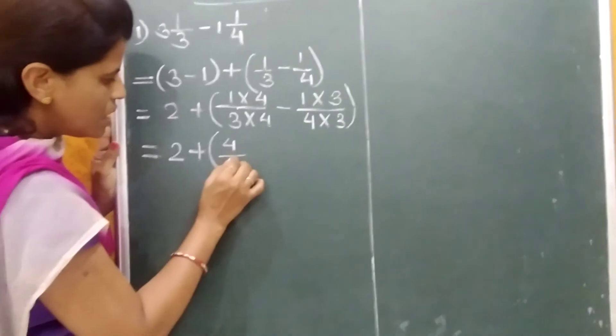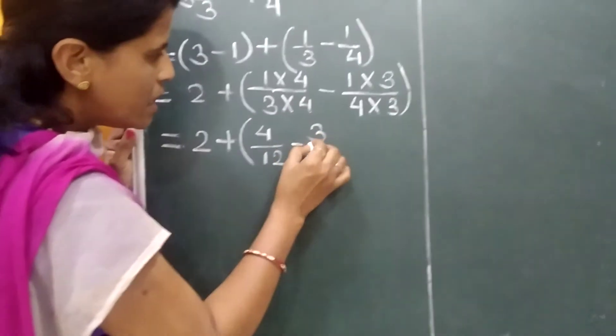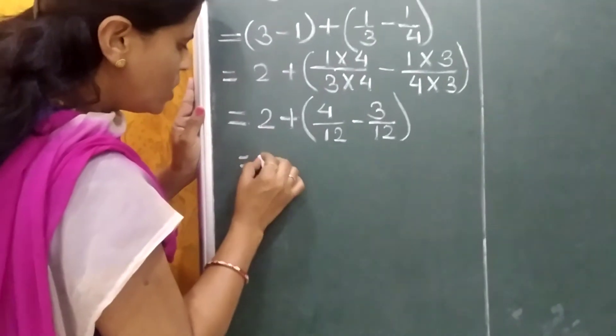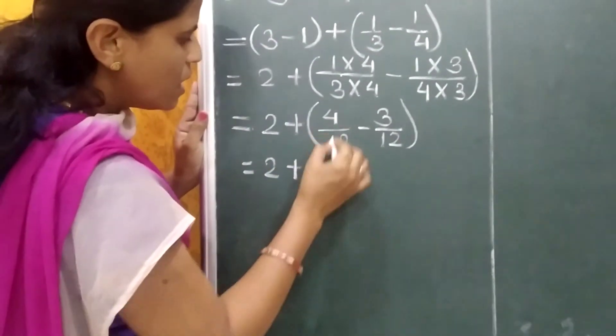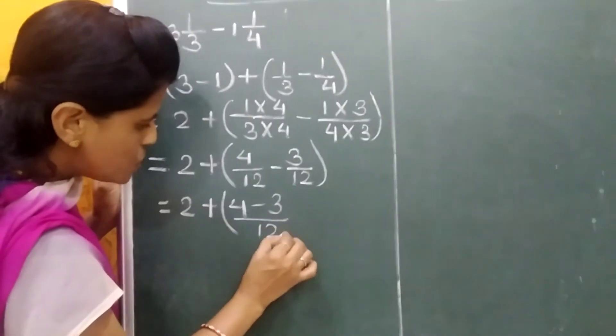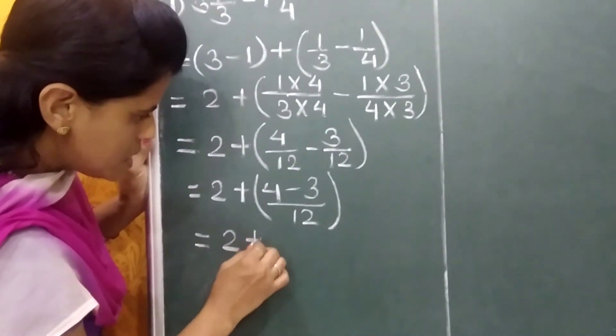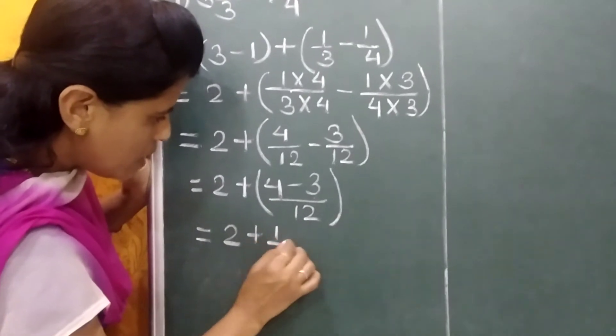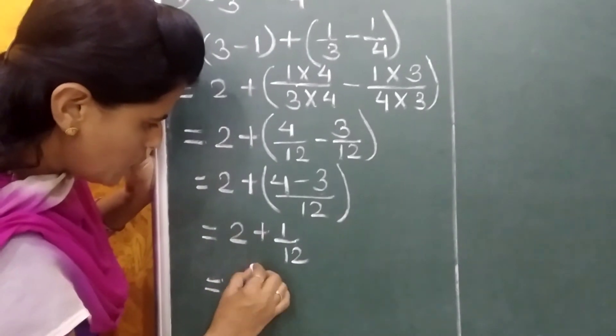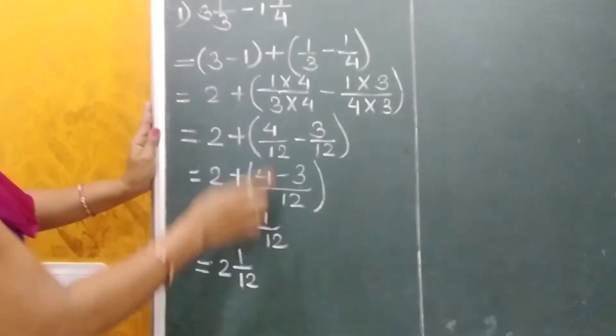Now 2 plus, 3 fours are 12 minus 3 ones are 3, 4 threes are 12, which is equal to 2 plus 4 minus 3 upon 12, which is equal to 2 plus 1 upon 12. So we will get the final answer 2 and 1 upon 12. This is the subtraction of this number.